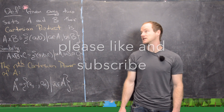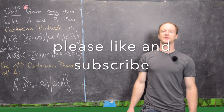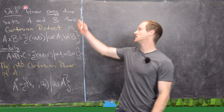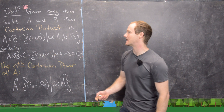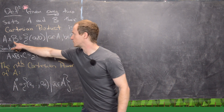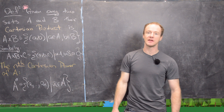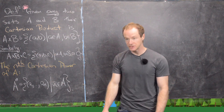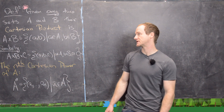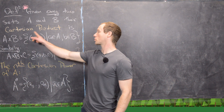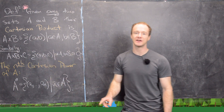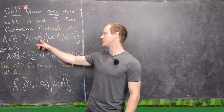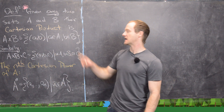We're continuing our exploration of the basics of sets, and here we want to look at something called the Cartesian product, which can be defined for any two sets. Given any two sets A and B, their Cartesian product is written A cross B. That's the set of all ordered pairs (a, b) where a comes from A and b comes from B.